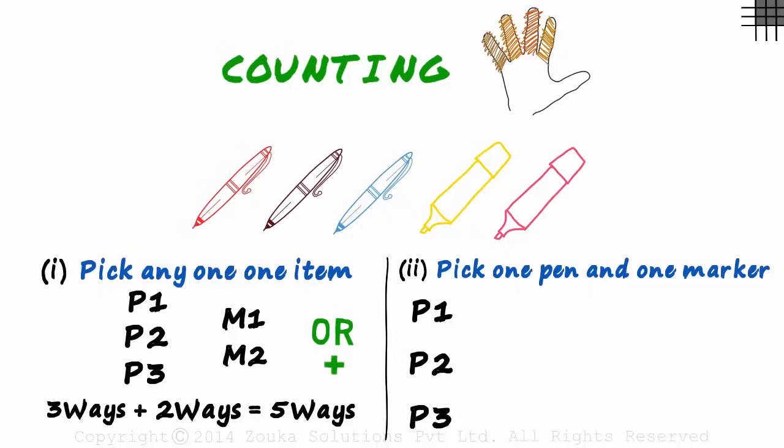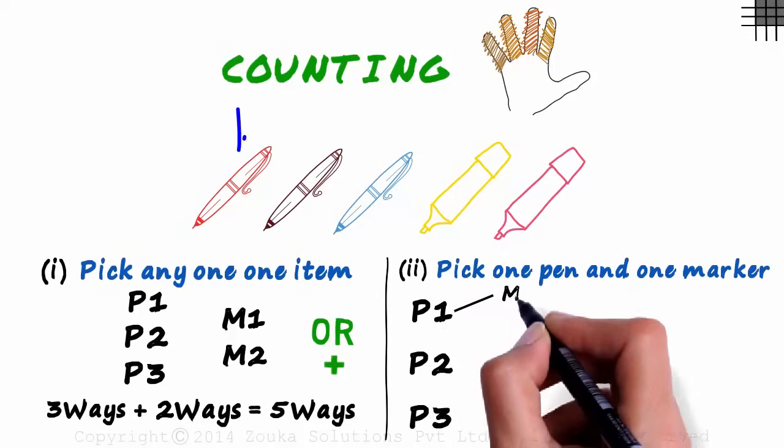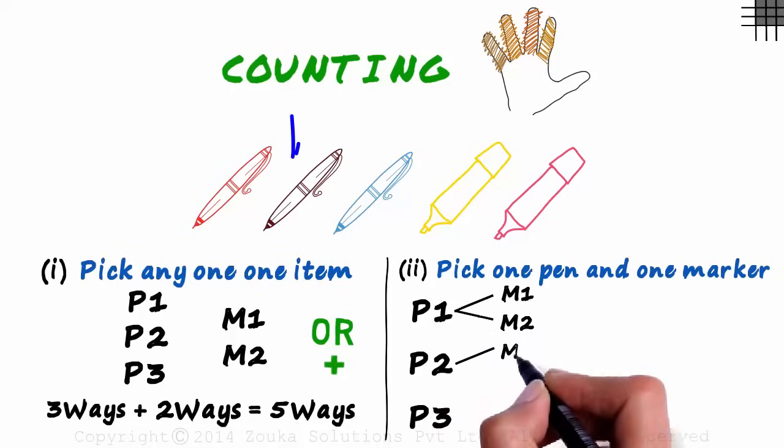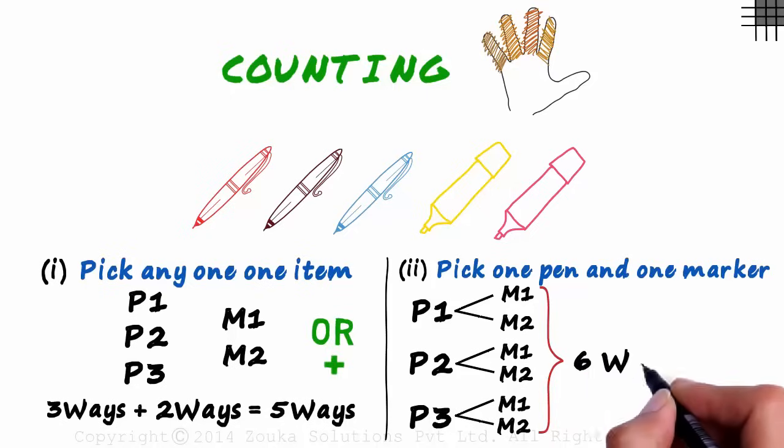Maybe after picking the first pen, we pick the first marker, or maybe after picking the first pen, we pick the second marker. So one way is P1 M1, and another is P1 M2. Or maybe we pick P2 and then M1, or P2 and M2. In all we can see that there are six ways in which we can pick a pen and a marker.